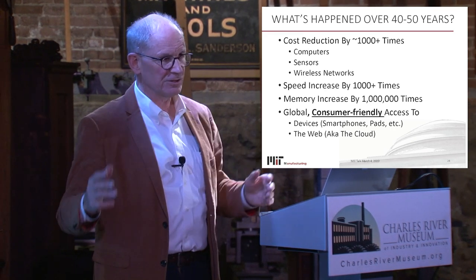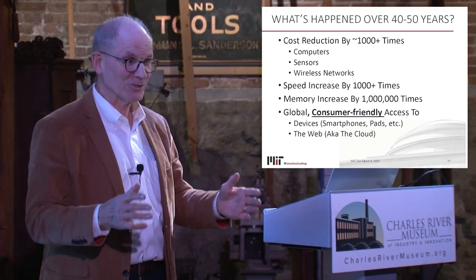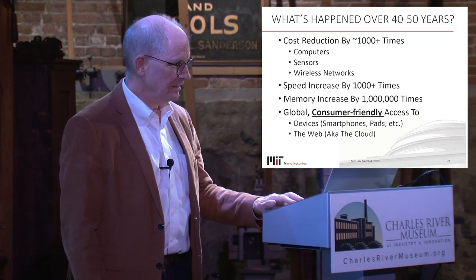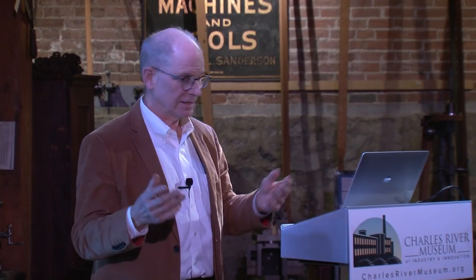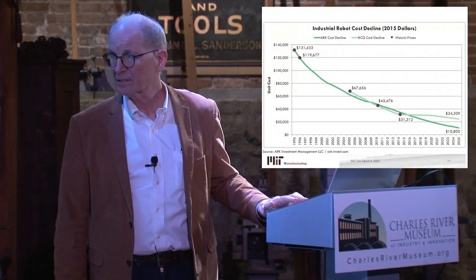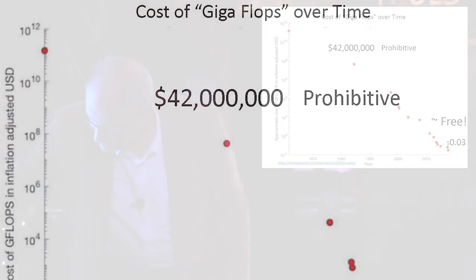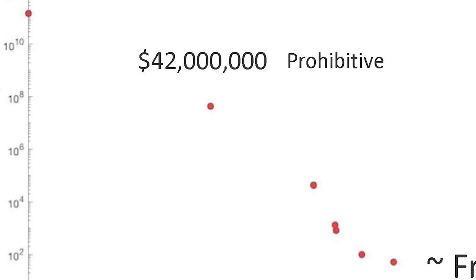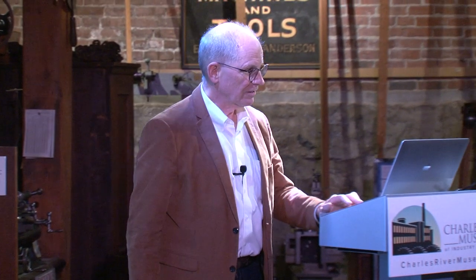So what happened in those 40 to 50 years is the cost reduction is a thousand-plus times in computers, sensors, and wireless networks. The speed of computing is enormous — easily a thousand times, maybe 10,000 times. Back in 1980 to get 100 gigaflops — that would be like a supercomputer — it was $42 million. Now that same cost per gigaflop is 3 cents. So I call that prohibitive, and the other one is free.